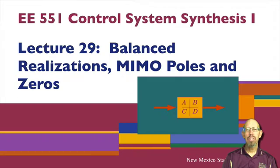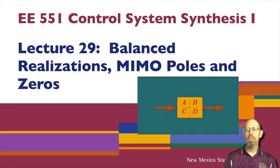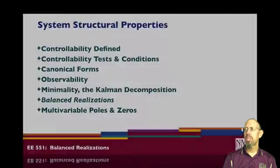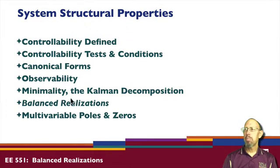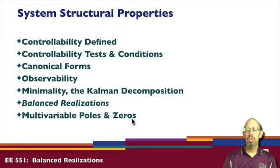In this lecture we're looking at a number of different things related to systems. In this unit we have looked at a number of different topics: controllability, different tests and conditions for controllability, canonical forms, observability, minimality, and the Kalman decomposition. We're going to look now at balanced realizations, multivariable poles and zeros, and then move on to talk about observers.